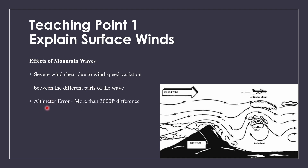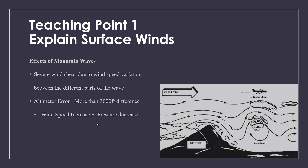Finally, there will also be altimeter errors. There could potentially be more than 3,000 feet of difference between your actual altitude and the altimeter's reading. This is caused by wind speed increase and pressure decreasing, which negatively impacts how the altimeter reads. These are the effects of mountain waves, and they're actually pretty dangerous.